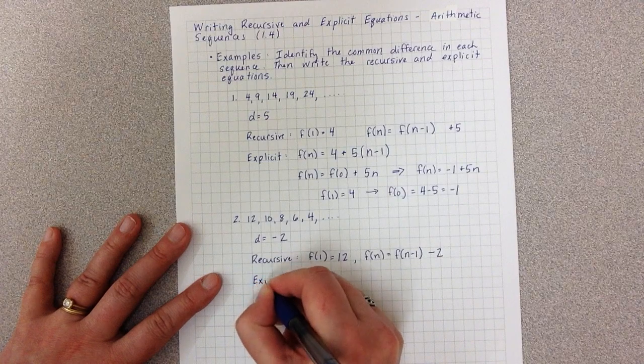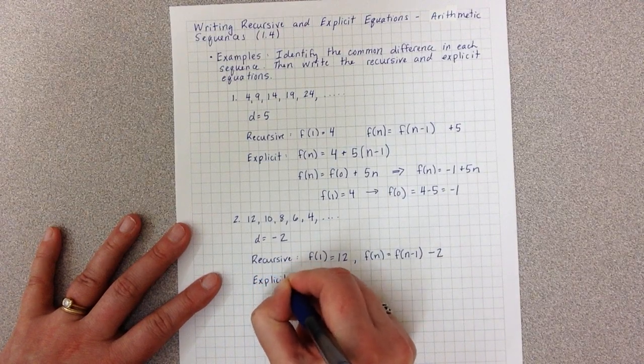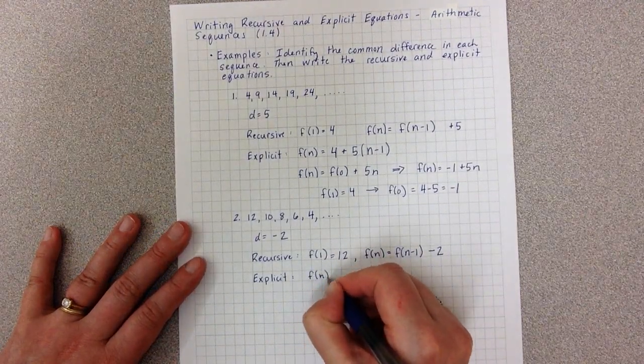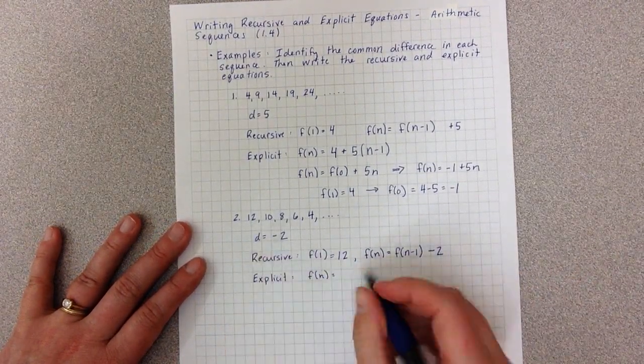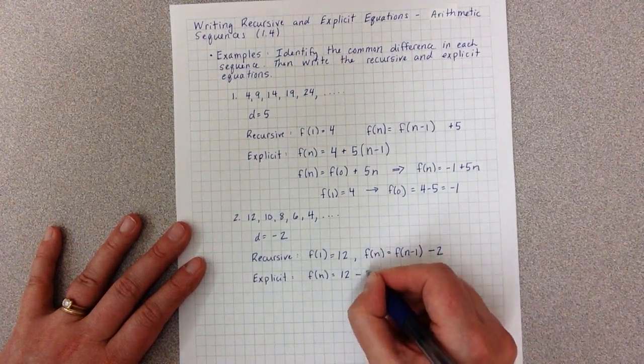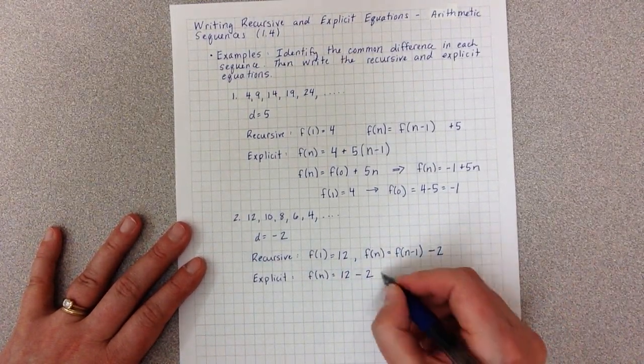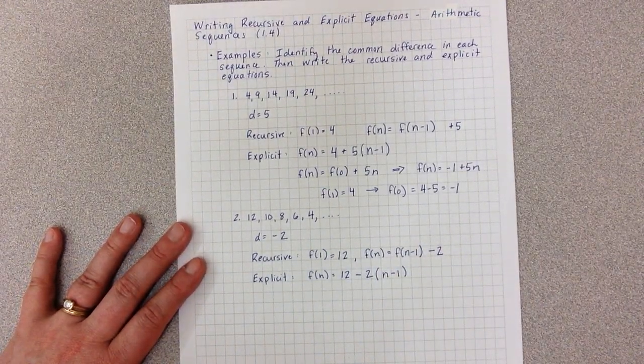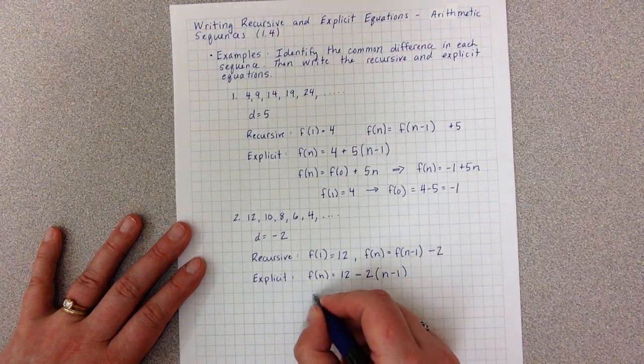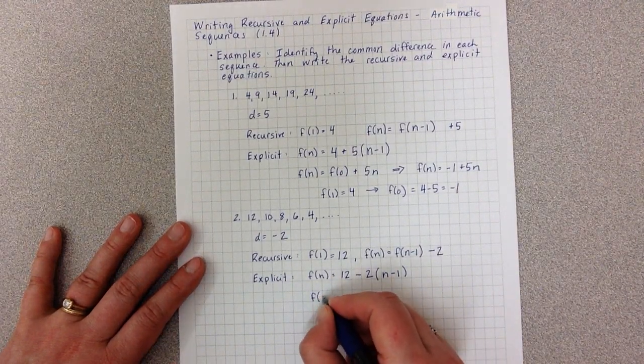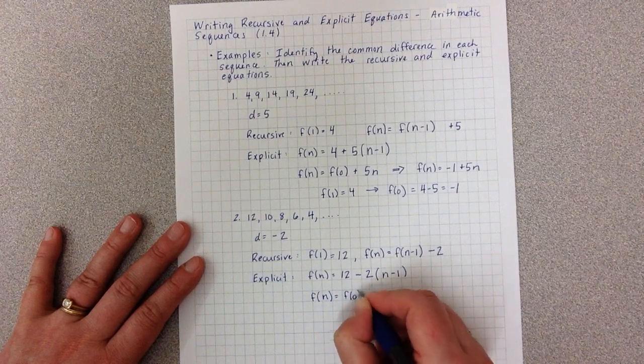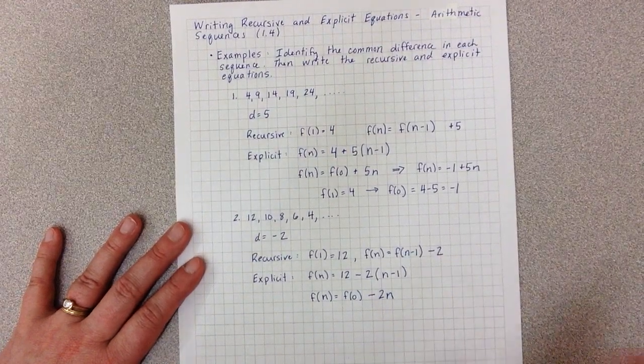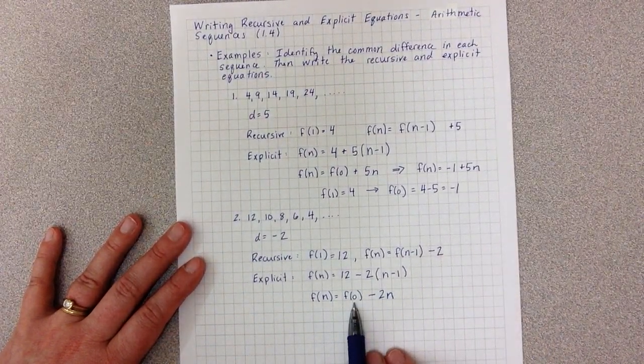So now I can more easily write the explicit. And again, I can do this one of two ways. The first way is I can say F(N) begins at 12. I subtract two each time, but I don't do it for the first term, so I have to go back one. The second way to do this is to say I want to use the zero term so that I can simply say minus 2N. I don't have to think about this going backwards business. So I need to find what F(0) is.